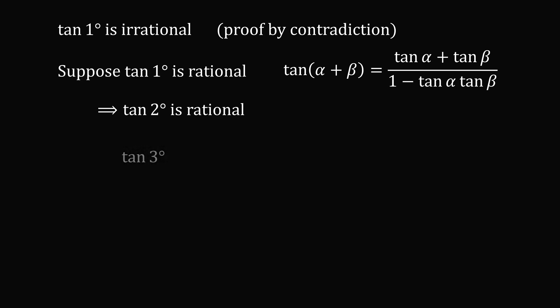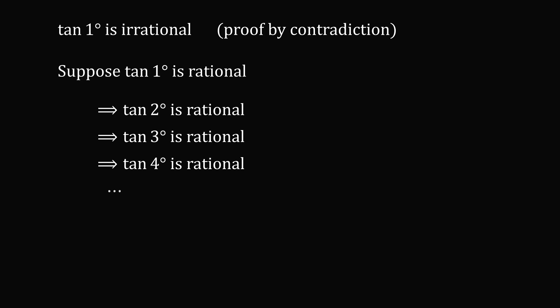We can now apply the same thing to consider tangent of three degrees. We will rewrite this as tangent of two degrees plus one degree. We then apply the tangent sum formula. Now, we have the sum, the product, the difference, and the ratio of rational numbers, and we know the denominator is not zero because tangent of three degrees is well-defined. So, this all ends up working out that this will be a rational number as well. If tangent of one degree is rational, then tangent of two degrees is rational, which implies tangent of three degrees is rational, and we can continue the logic. Tangent of four degrees will be rational, and so on, all the way up to tangent of 60 degrees being rational.